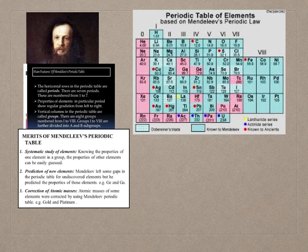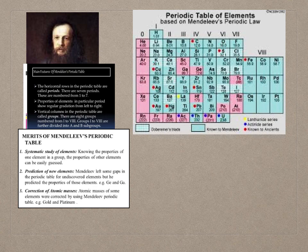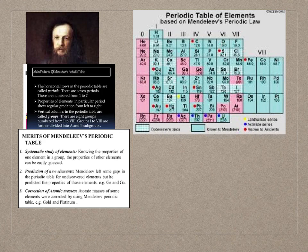Mendeleev left some gaps in the periodic table for undiscovered elements and predicted their properties. For example, he kept vacant places for three unknown elements and gave them the names Eka-boron, Eka-aluminium, and Eka-silicon, predicting their atomic masses as 44, 68, and 72 respectively. Not only their masses but also their properties were predicted. Later, these elements were discovered and named scandium, gallium, and germanium respectively, and their properties matched well with those predicted by Mendeleev.